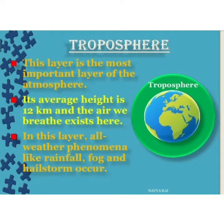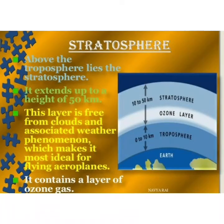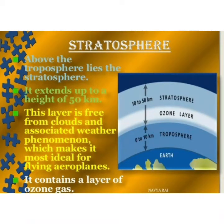As we go up, the air gets thinner and there is less oxygen. This next layer is almost free from clouds and is ideal for flying aeroplanes — it is called the stratosphere. The stratosphere contains a layer of ozone gas. Ozone, or O3, protects all beings on earth from the ultraviolet (UV) rays of the sun.